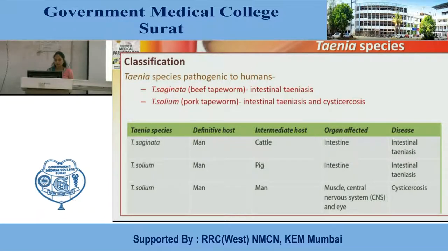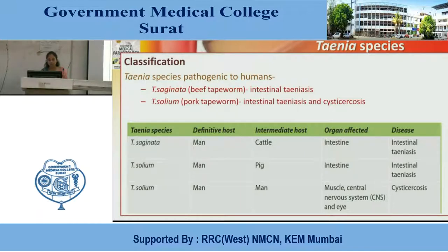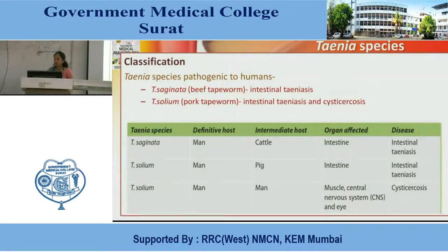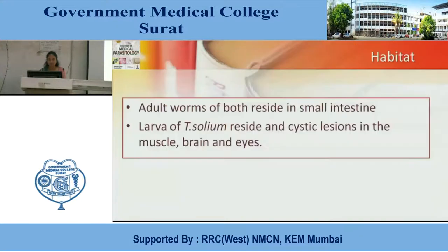Hosts classified according to species: For Taenia saginata, definitive host is man, intermediate host is cattle, organ affected is intestine, disease caused is intestinal taeniasis. For T. solium, definitive host is man; intermediate hosts are pig and also man. In pig the organ affected is intestine causing intestinal taeniasis; in man as intermediate host, organs affected are muscles, central nervous system, and eye, causing cysticercosis. Habitat: adult worm of both species resides in the small intestine. Larvae of T. solium reside in cystic lesions in the muscle, brain, and eyes.